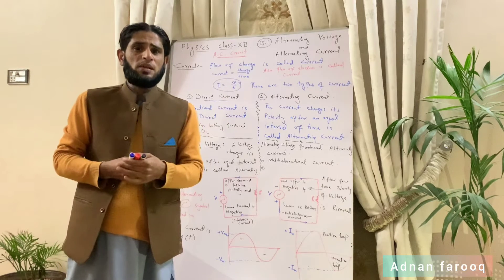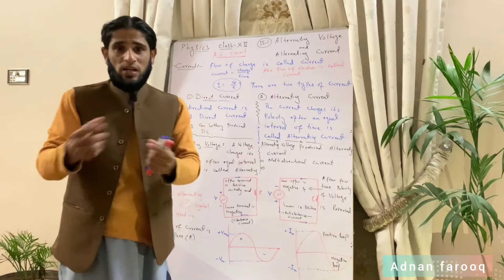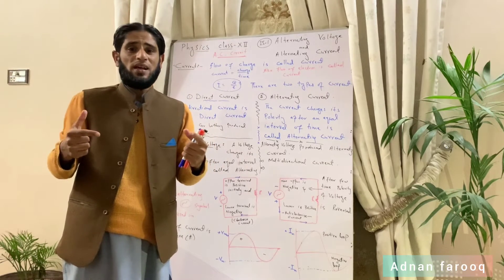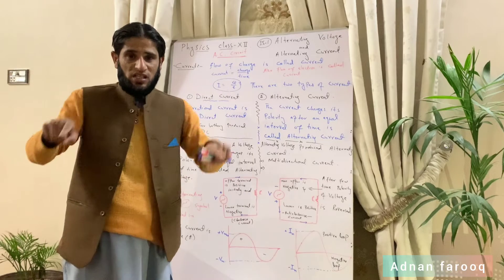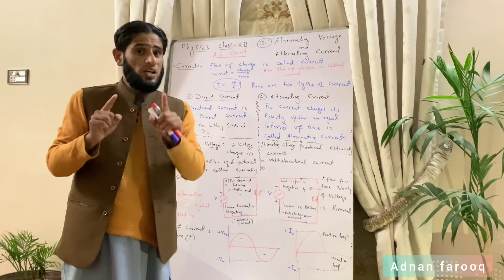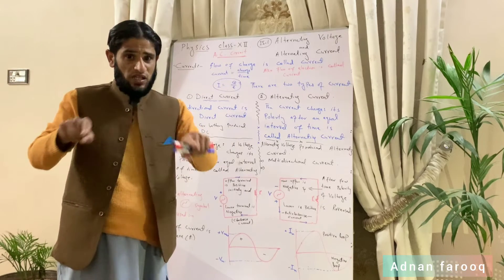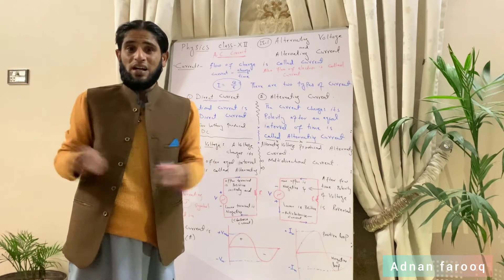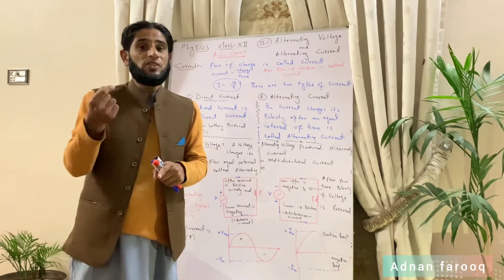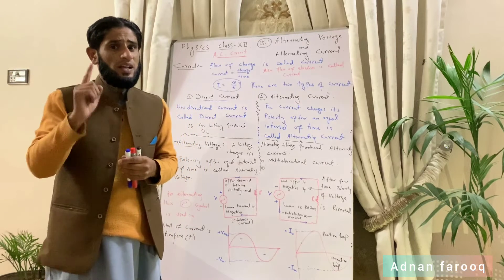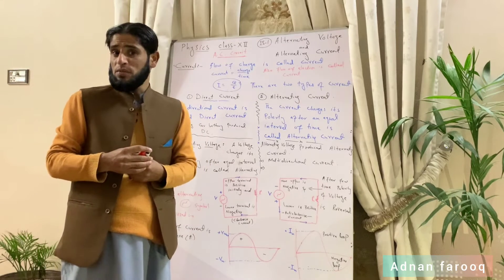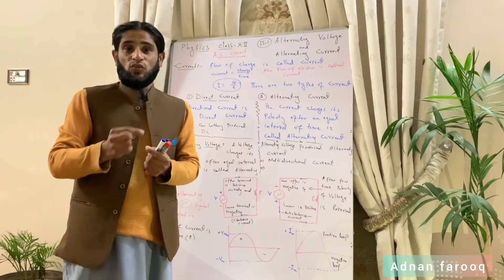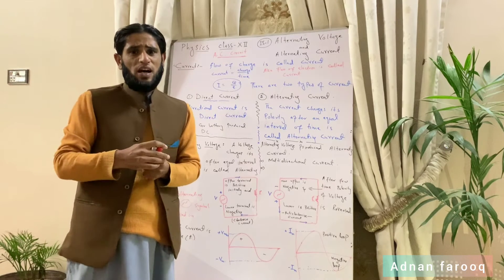پچھلے چپٹر میں ہم نے پڑھا کہ charge جب flow کرتا ہے تو charge کی اپنی electric field ہوتی ہے۔ Charge کے گرد — positive ہو یا negative — اس کے گرد جو area یا region ہوتا ہے وہ اس کی electric field کہلاتی ہے۔ اسی چپٹر میں ہم نے پڑھا کہ جب بھی charge حرکت کرتا ہے تو وہ current بناتا ہے۔